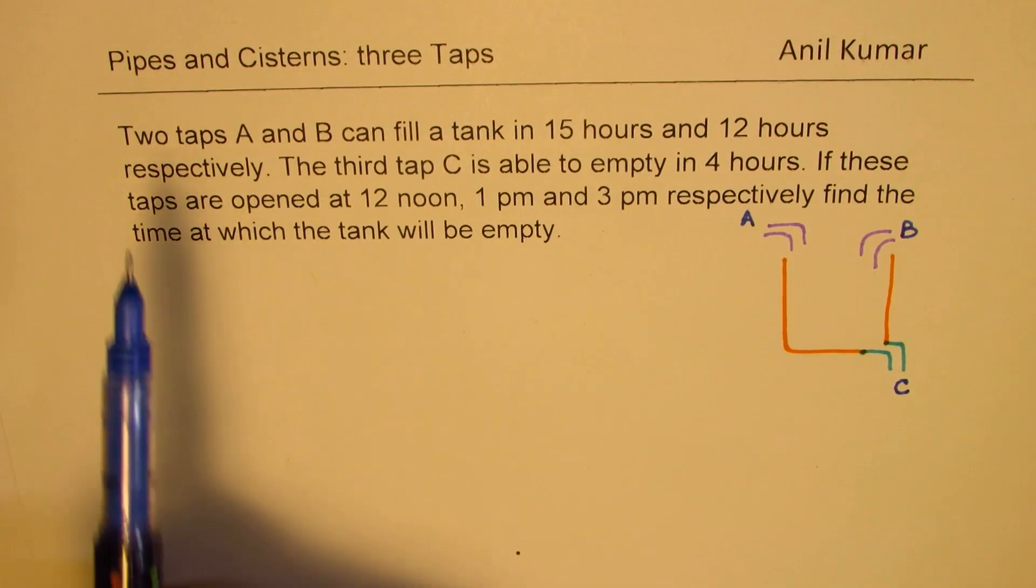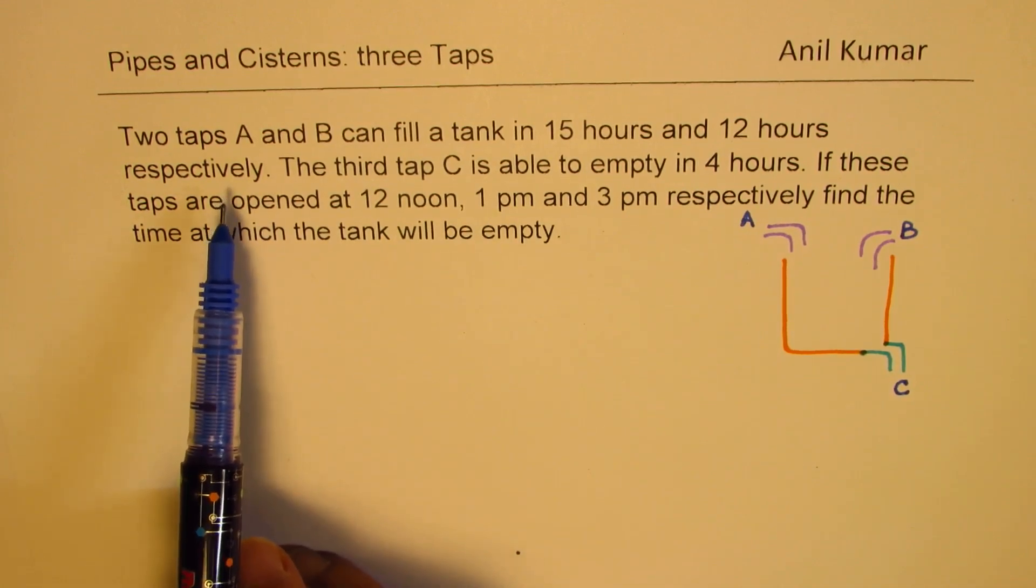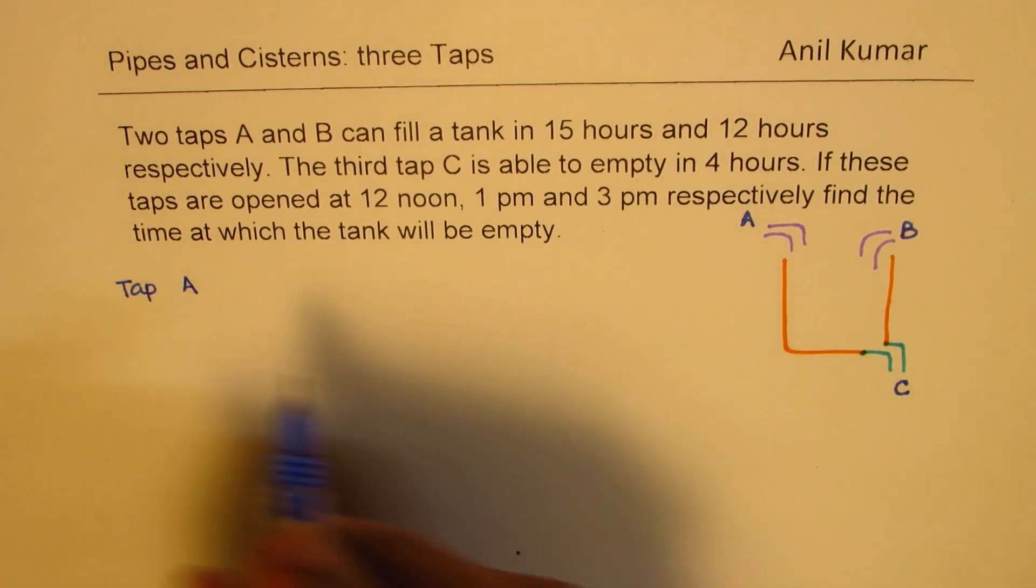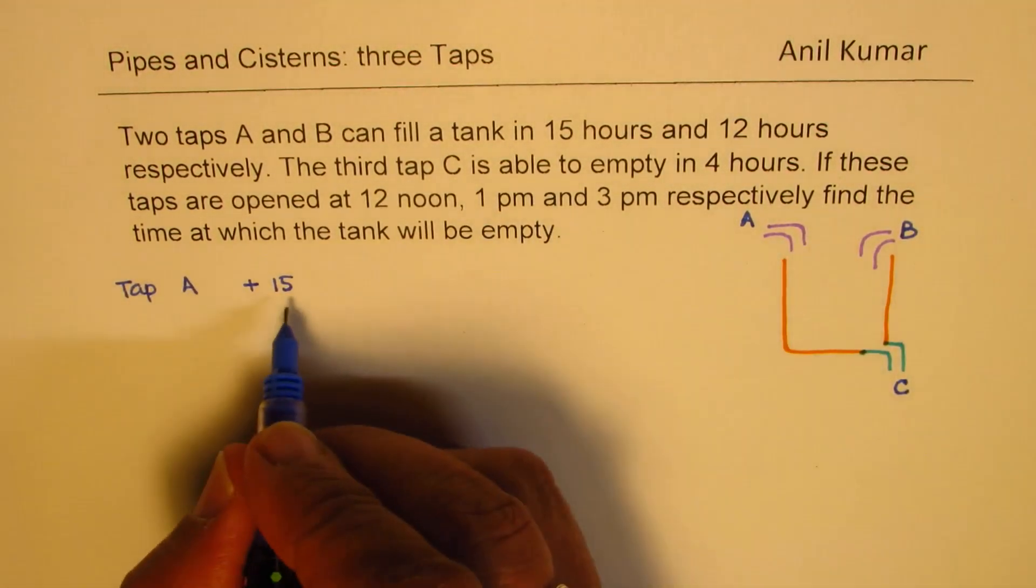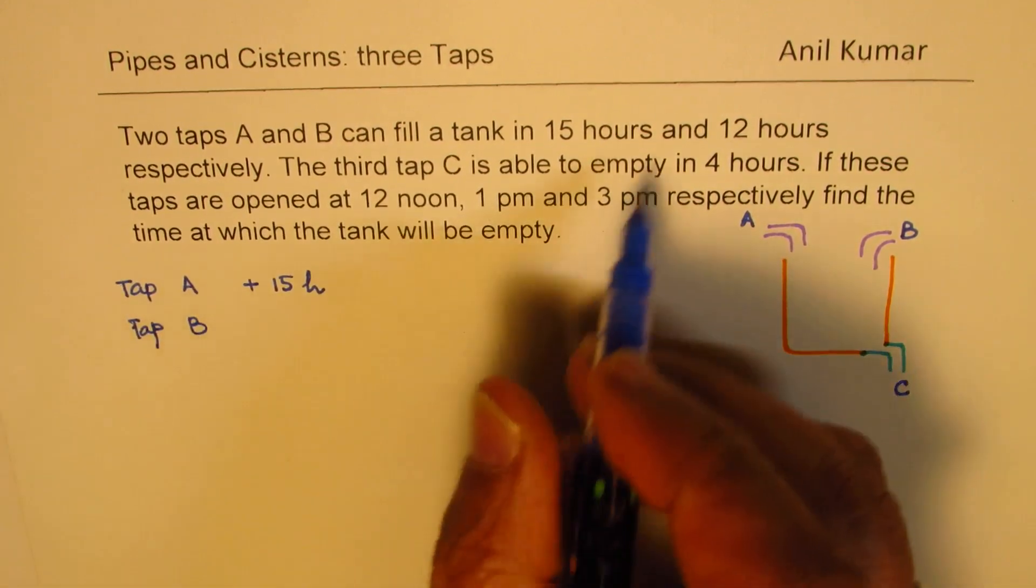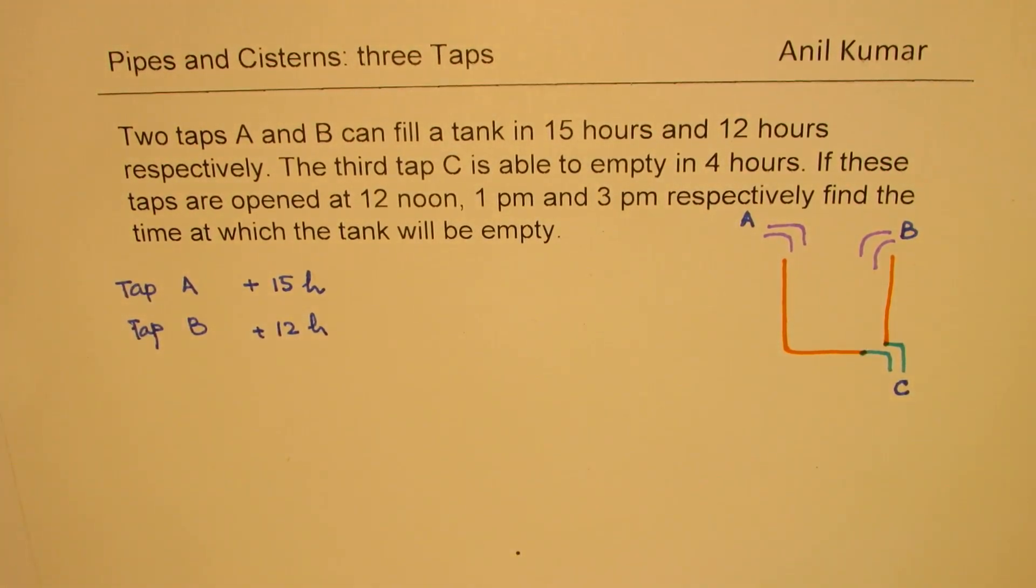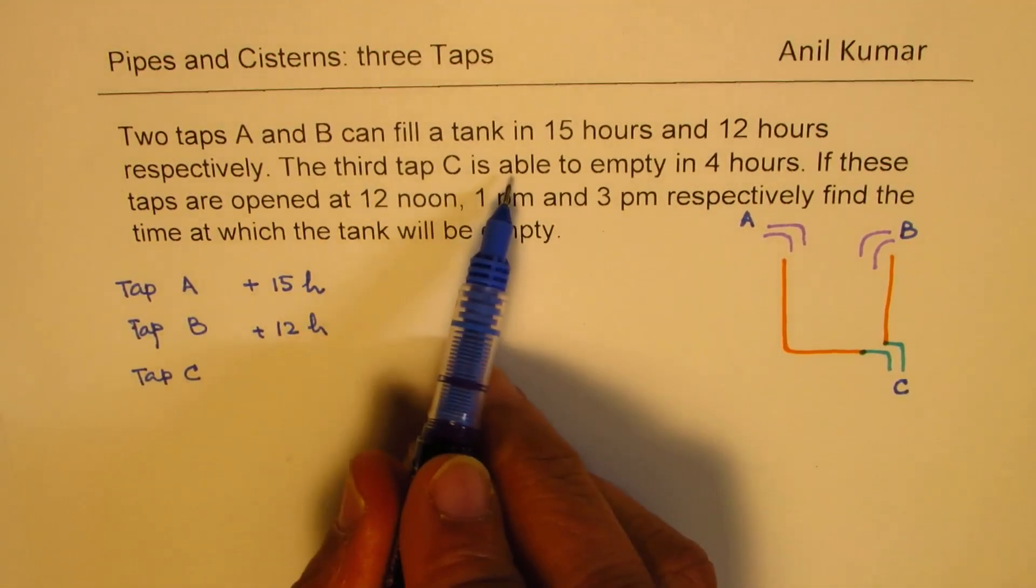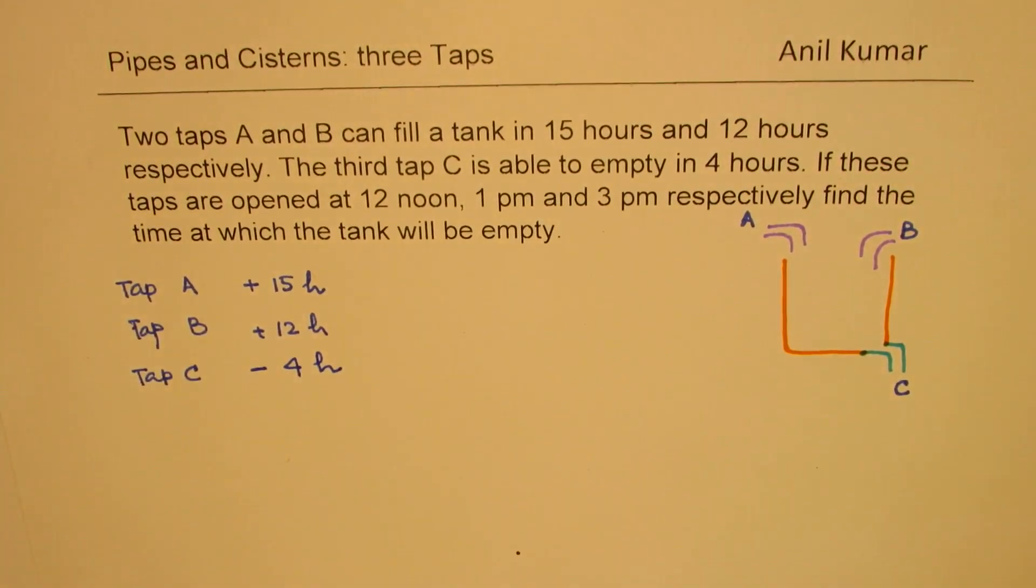What we're given here is that the taps A and B can fill a tank in 15 hours and 12 hours respectively, that means alone. So tap A will fill, let's say positive, in 15 hours. As far as tap B is concerned, it takes 12 hours. It is more efficient, it is faster. And C is a drain pipe, so it drains. It is able to empty the whole tank in four hours. So minus for four hours.